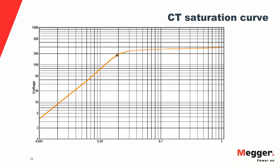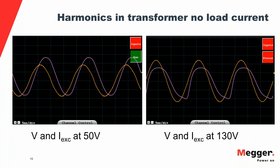This can be highlighted using a CT saturation curve. On the Y-axis is the voltage applied across the secondary winding; on the X-axis is the excitation current. There is a saturation point marked — at 180 volts, indicating a C200 CT. Taking two points on the curve — at 50 volts and at 130 volts — and observing the waveforms: at 50 volts the current (shown in purple) is a clean sinusoid, while at 130 volts there is significant distortion in the current waveform.